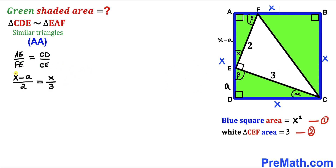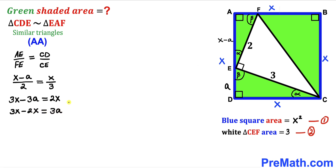Cross-multiplying gives 3(x − a) = 2x, which expands to 3x − 3a = 2x. Moving terms: 3x − 2x = 3a, so x = 3a. Dividing both sides by 3 gives a = x/3. This is equation 3.